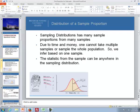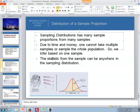Also, I wanted to review Lesson 16, the distribution of a sample proportion. A sampling distribution has many sample proportions from many samples. However, due to time and money, one cannot take multiple samples or sample the whole population, so we infer based on one sample. The statistic, or p-hat, from the sample can be anywhere within the sampling distribution. Down below here represents a distribution of the sample proportion. The center here represents our true proportion, or p.